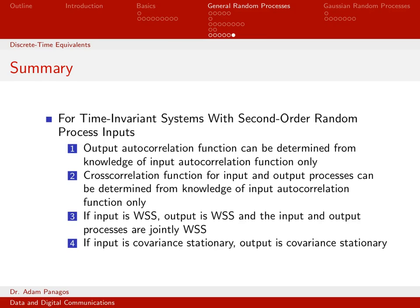We've seen very similar equations for discrete time systems — not surprisingly, very similar to the continuous time case, and all the trends are exactly the same. To compute the output autocorrelation function, you only need the input autocorrelation function and the system impulse response. The same is true for the cross-correlation. If the input is wide-sense stationary, the output will also be wide-sense stationary, and input and output are jointly wide-sense stationary. If the input is covariance stationary, the output is covariance stationary. All these observations from the continuous time case hold for discrete time as well. We went through this more quickly, but all the steps are so similar it wasn't worth repeating the nitty-gritty details.